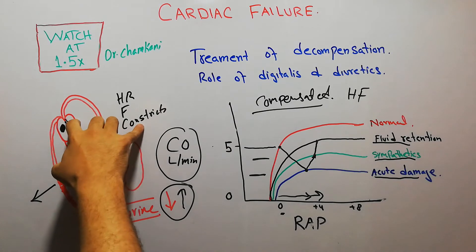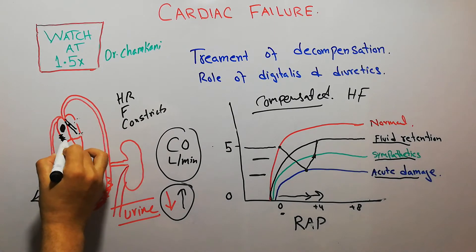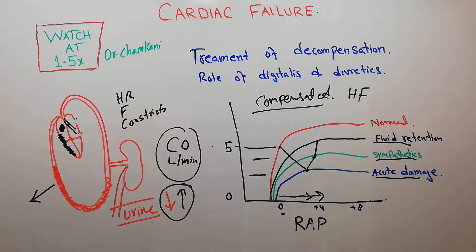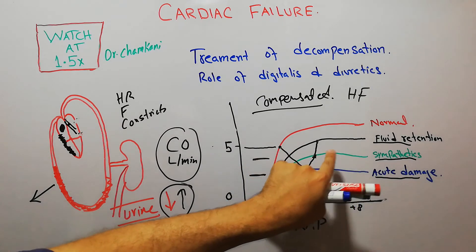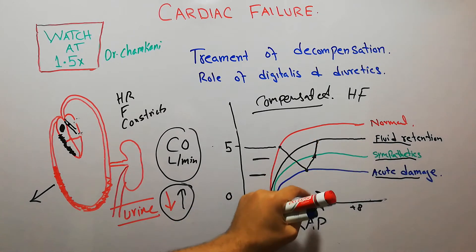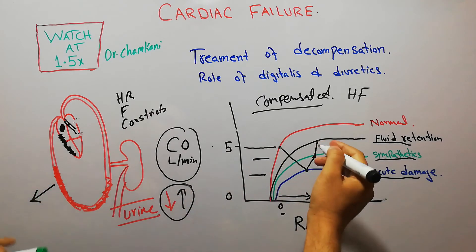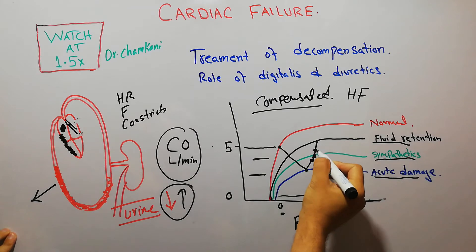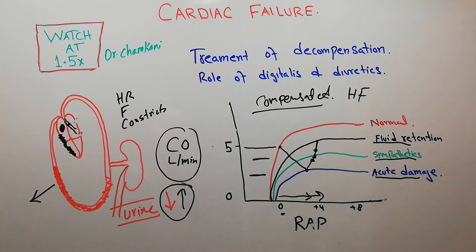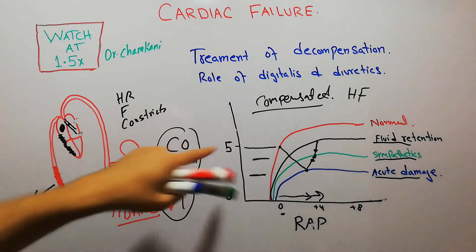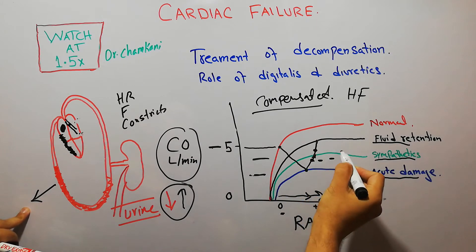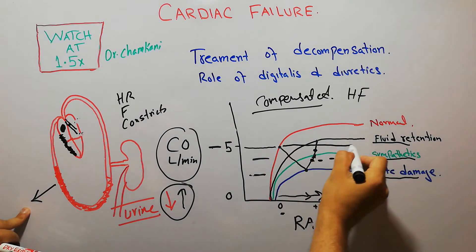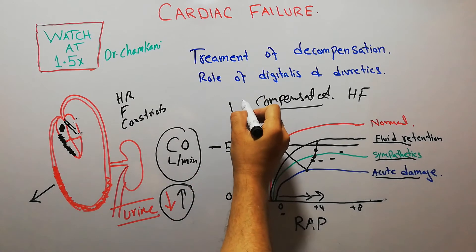However, if the damage to the heart is very large — for example, a big portion of the heart has been damaged — then even with the help of the sympathetic system and fluid retention, the cardiac output cannot be brought back to normal. It remains below the normal level because the heart cannot recover with these compensations. This condition is known as decompensated heart failure.